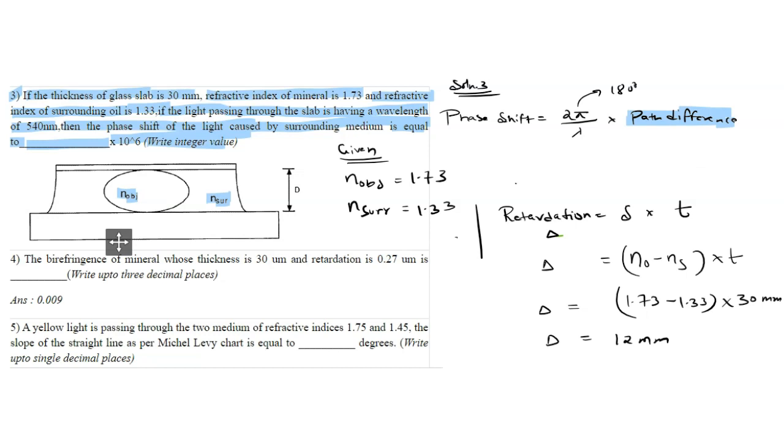It will become 180 times 2, which is 360 degrees, upon 540 nanometer (10^-9 meters), multiplied by the retardation 12 millimeter (12 × 10^-3 meters). When you solve this, you get 8 × 10^6. Since 10^6 is already there, you write 8 as the answer.